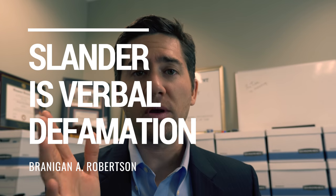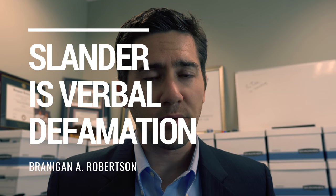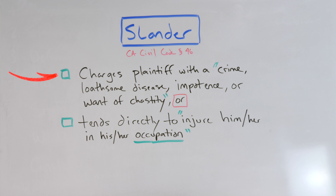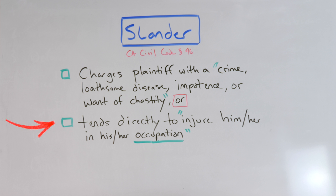Slander is the spoken or verbal form of defamation and also requires those five elements under the general defamation category we discussed. But California Civil Code section 46 gives us some additional insight as well. It says slander charges the plaintiff with a crime, loathsome disease, impotence, or want of chastity, or tends directly to injure him or her in his or her occupation. So the verbal false statement of fact must do one of those things.